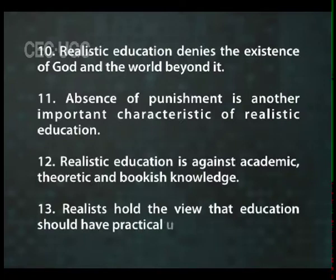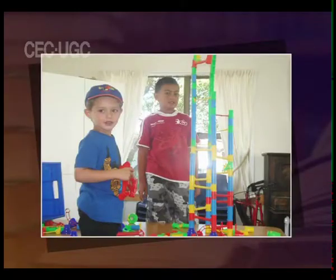Realists hold the view that education should have practical utility for the child. Realists do not believe in general and common aims of education. For them, the aim of education depends on each individual and his perspectives. Preparation for happy and successful life is a key aim: education should help the child to solve the problems of his life successfully and lead a happy life. For this, the child can undertake activities concerned with language, hygiene, social activities, activities related to mental health, leisure activities, vocational activities, etc.